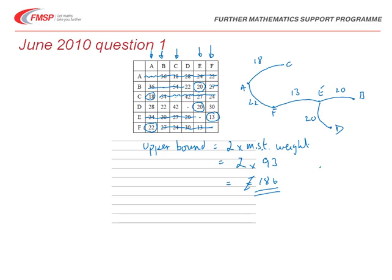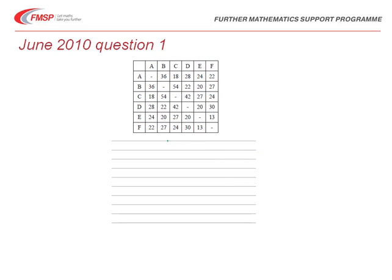Before I go on to the next part of the question just to look at the marking for that there was a method mark and an accuracy mark for the tree and then once you've done that a B mark for working out the size of the upper bound correctly.